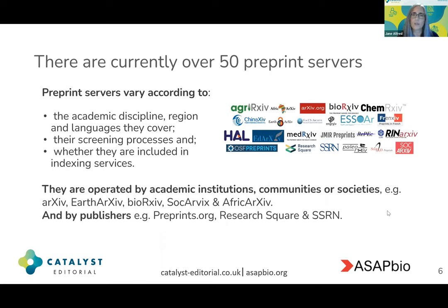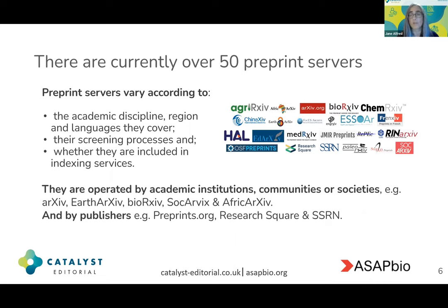It might surprise you to know that there are currently over 50 preprint servers available, and they vary according to the academic discipline, region and languages they cover. They vary according to their screening processes as well and whether they're included in indexing services. They're operated by a range of organisations, from academic institutes to communities and societies, and also by some publishers.